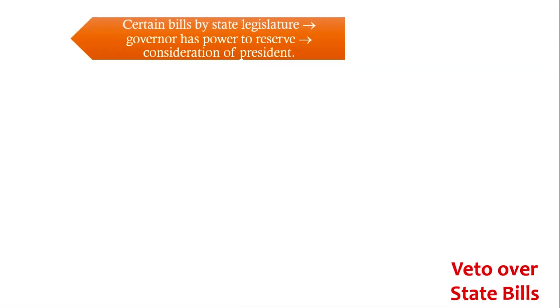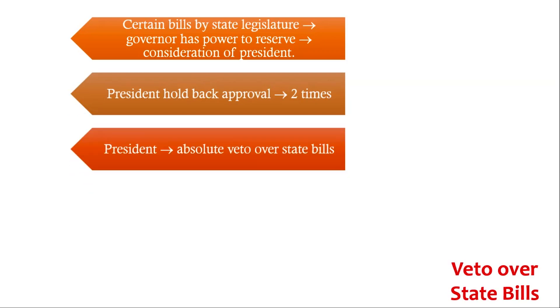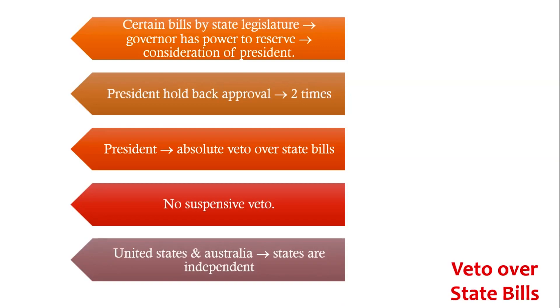Veto over State Bills: In certain types of bills, when they are passed by the state legislature, the Governor has the power to reserve them for the consideration of the President. The President can hold back his approval to such bills not only the first time but also the second time, which shows that the President enjoys absolute veto over state bills, though not a suspensive veto. In the United States and Australia, the states are independent within their field and there are no such reservation laws.